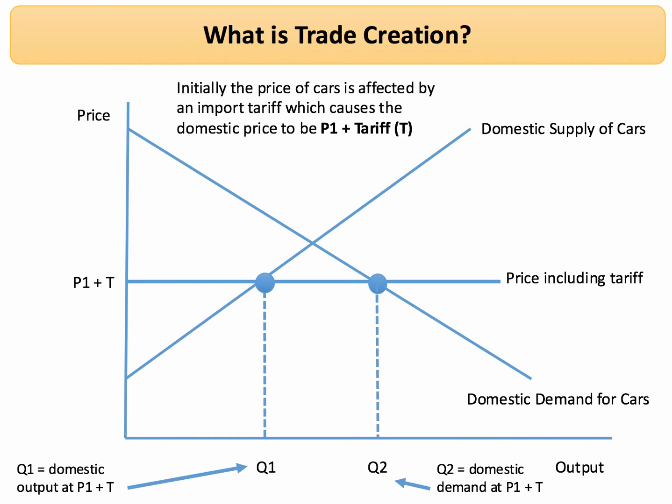At that price, domestic supply — assuming that domestic car producers are price takers — is Q1, and domestic demand from consumers, households buying cars and businesses buying fleets of cars, is Q2. Q1 and Q2 represent excess domestic demand, and that will be taken up by imports.